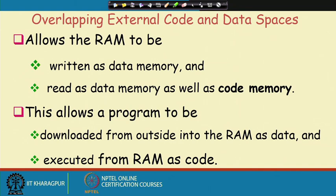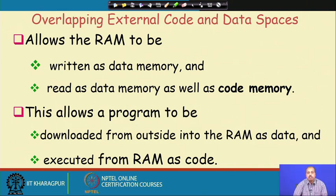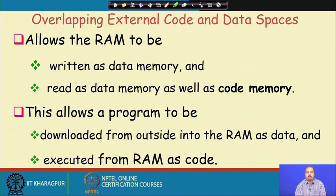The advantage of overlapping code and data spaces: it allows RAM to be written as data memory and read as data memory as well as code memory. While code memory is generally ROM (read only), if we use RAM then for write operations we can use the write bar pin, write values into the RAM as data memory. For program access we use PSEN bar, and for data access we use the read bar line. This allows a program to be downloaded from outside into the RAM as data and then executed from RAM as code.